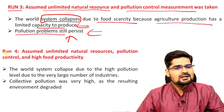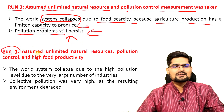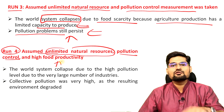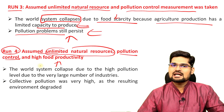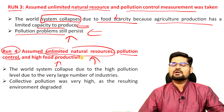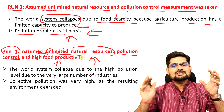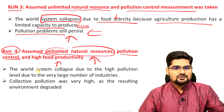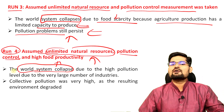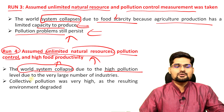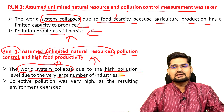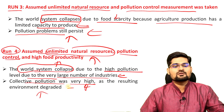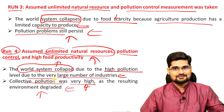Run number four assumed unlimited natural resources, pollution control, and also high food productivity — since food scarcity was the issue in run three. If we create a situation where these three things are present, what is the future of humanity? The world system was still found to be collapsing due to high pollution levels from a very large number of industries, and collective pollution was very high — the environment was completely degraded.